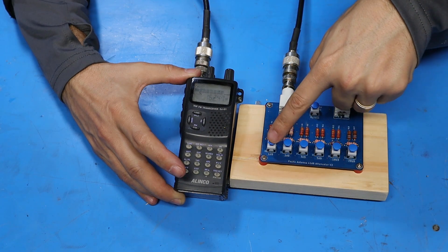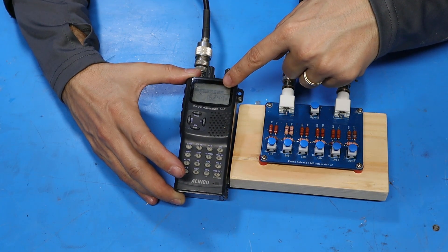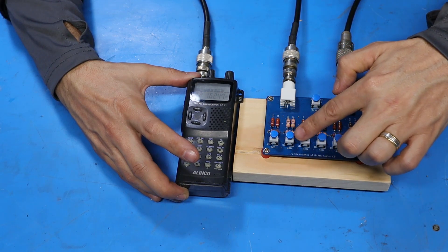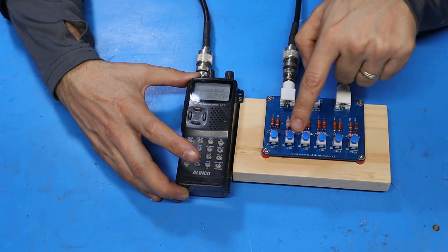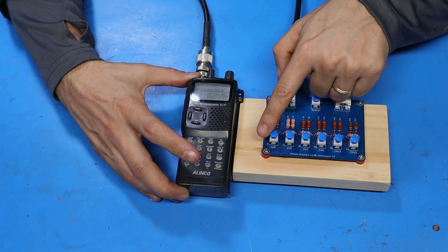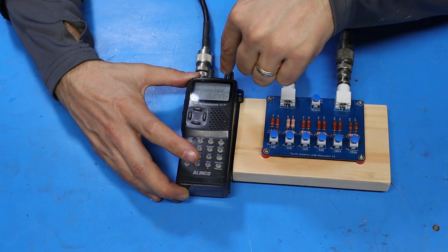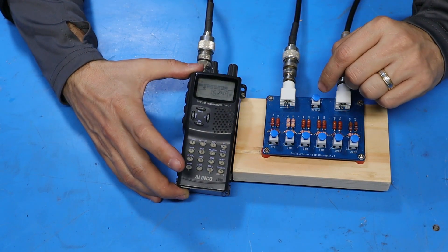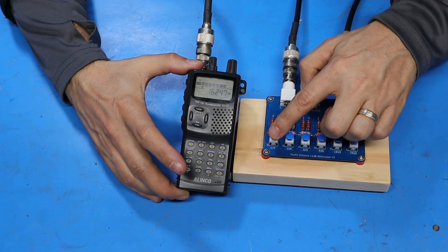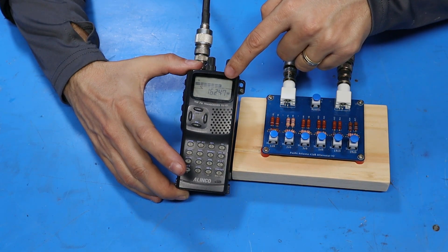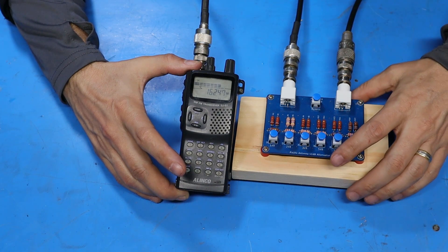But now if I start turning stages on you should start to see the signal drop. So I'm going to start off first and turn on the lower value ones - we've got one decibel, two decibel and three decibel. If I turn these all on that's six decibel of attenuation which should be one S unit on the meter here. You can see more or less that's what we've got. Let's continue on and see what happens.